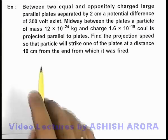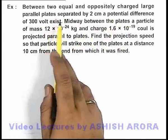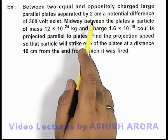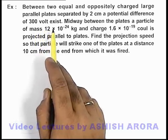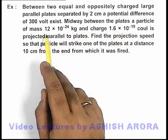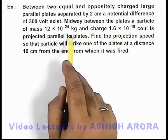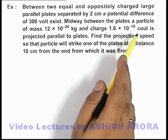In this example, we are given that between two equal and oppositely charged large parallel plates separated by 2 centimeters, a potential difference of 300 volts exists. Midway between the plates, a particle of mass 12×10⁻²⁴ kg and charge 1.6×10⁻¹⁹ coulombs is